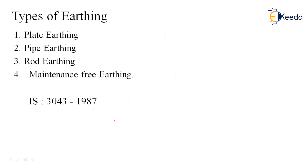What are the types of earthing? Types of earthing are plate earthing, pipe earthing, rod earthing, and the fourth is maintenance-free earthing. The IS code for this is IS 3043-1987, which guides you completely about the earthing specifications — all the numbers, digits, and details are given in this IS code.